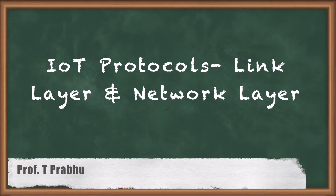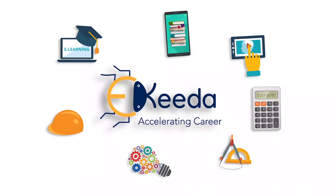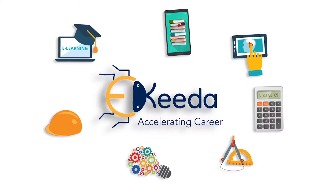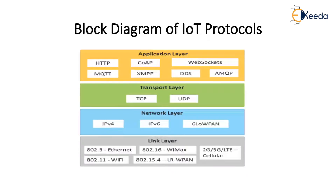In this lecture we are going to see about IoT protocols, specifically link layer and network layer. So far we have discussed physical design in IoT, which comprises functional blocks, generic block diagram, and IoT protocols. IoT protocols are a set of rules followed by IoT devices to transfer data. The layers which deal with IoT protocols are shown in the block diagram.